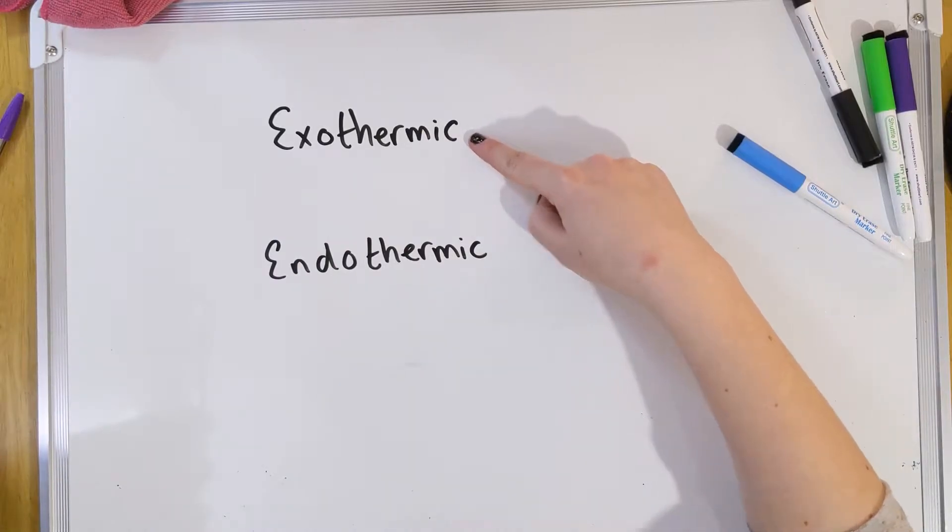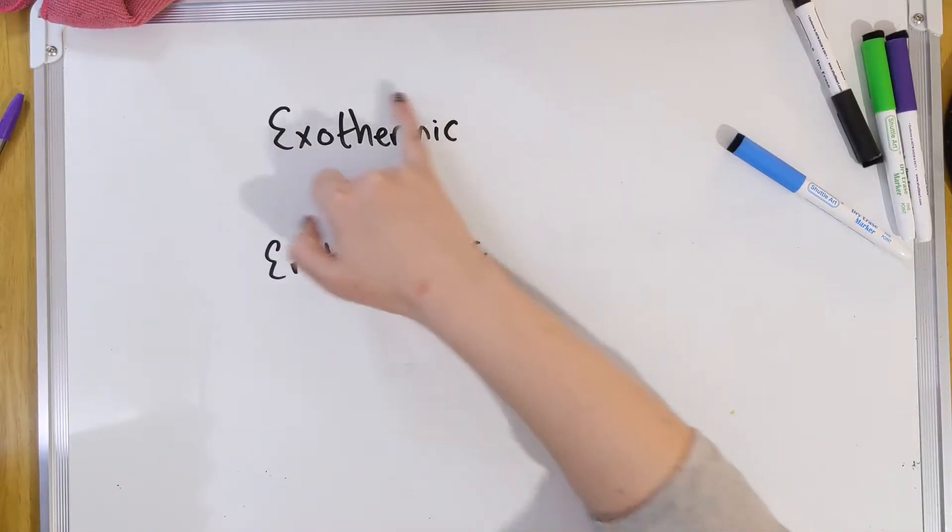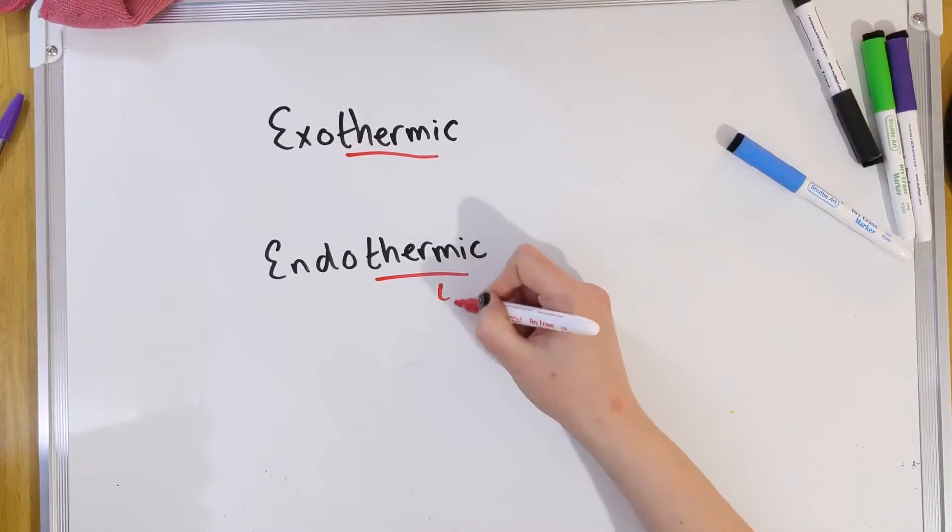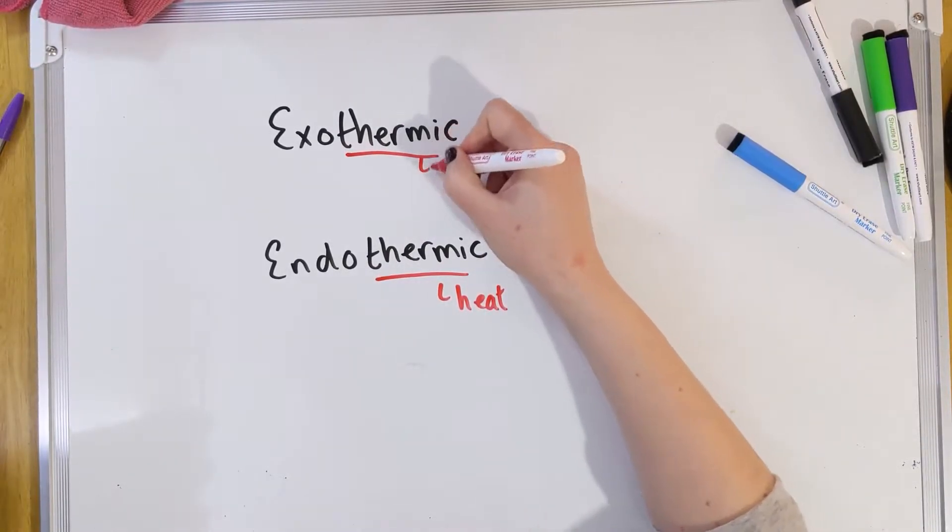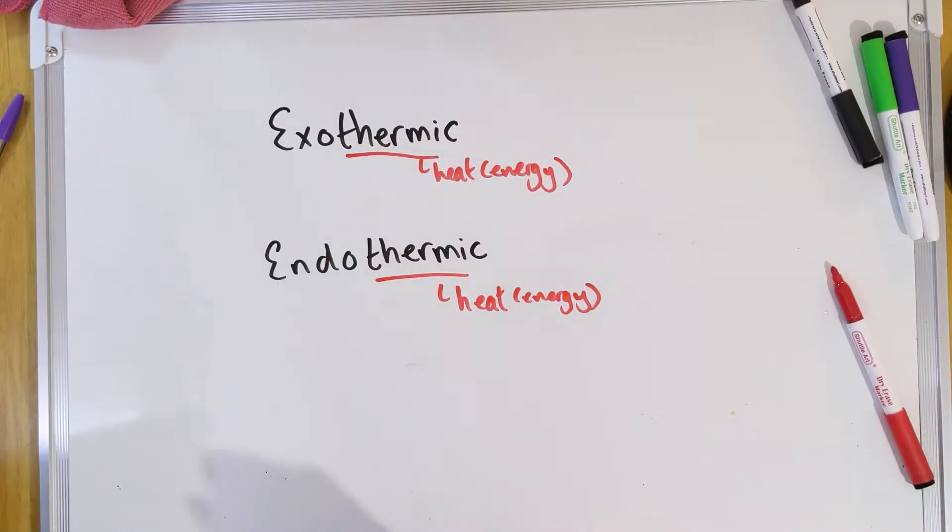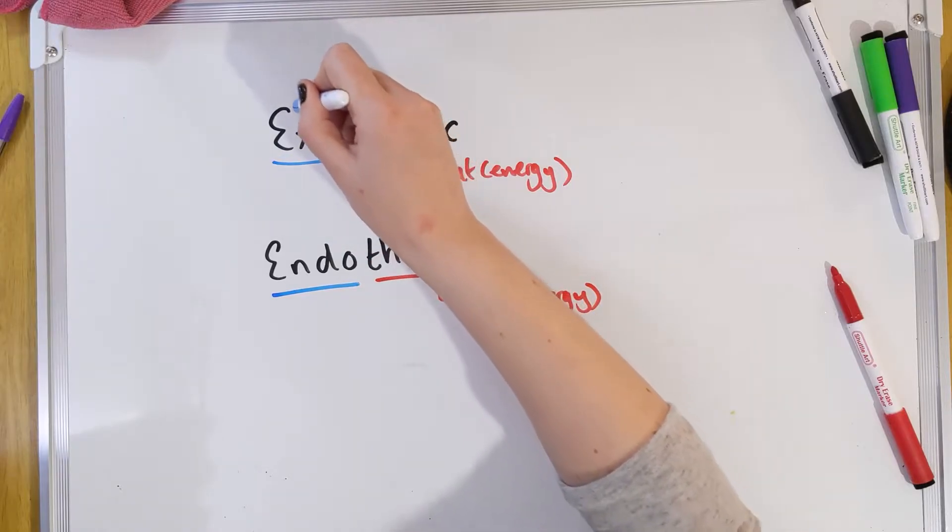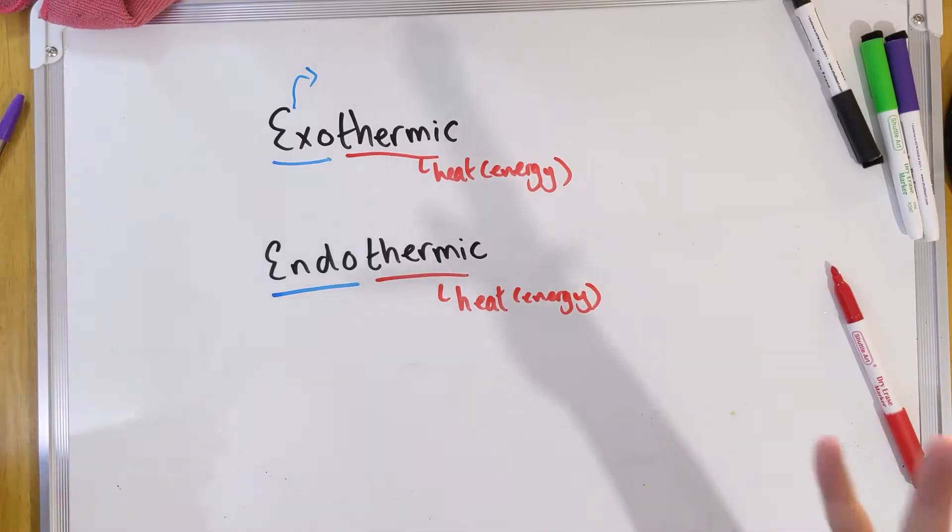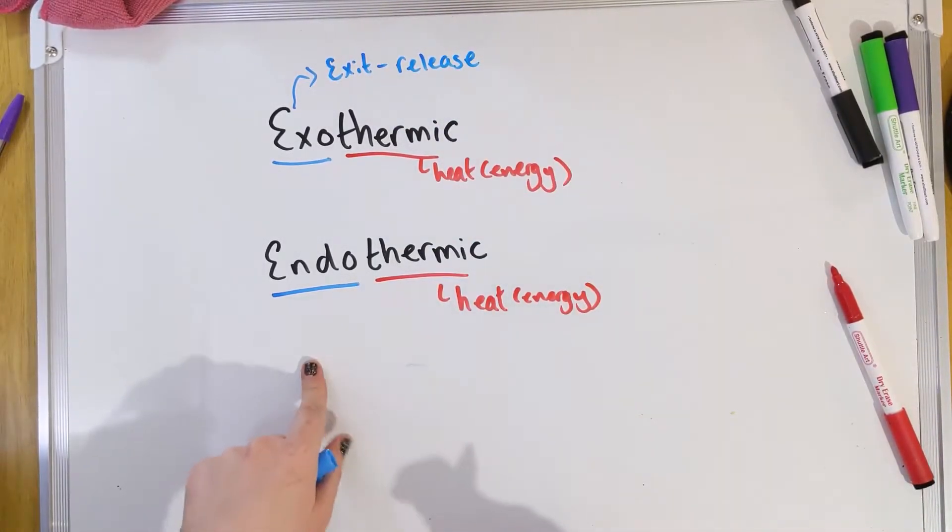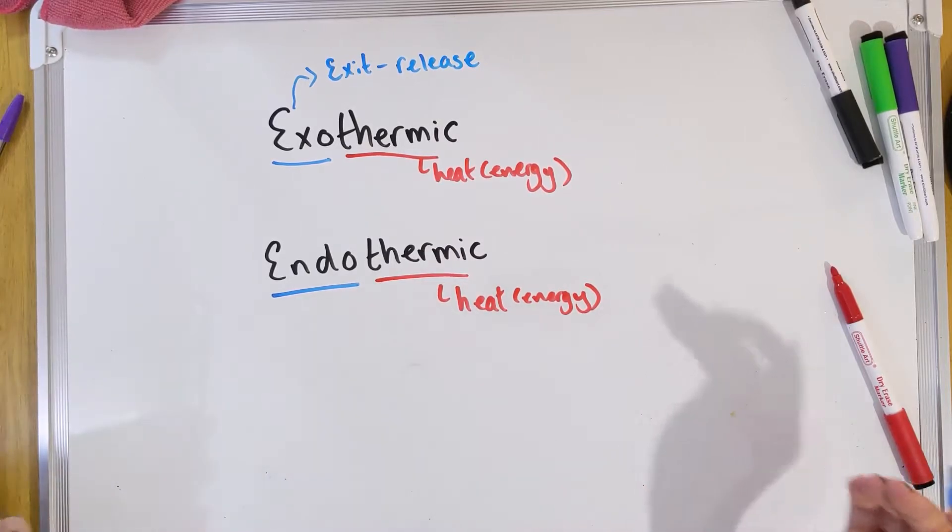So the first one, thermic in both. Thermic reminds me of thermal. Thermal makes me think of heat. So thermic in both of them is to do with heat or energy. And if we look at the two words, they both have different prefixes, the first parts of the word. In exothermic, we have exo and in endothermic, we have endo. How I remember the two. Exothermic. Exo makes me think of exit or something being released or leaving. And in endothermic, endo makes you think of enter. So this is energy being given in or being absorbed.